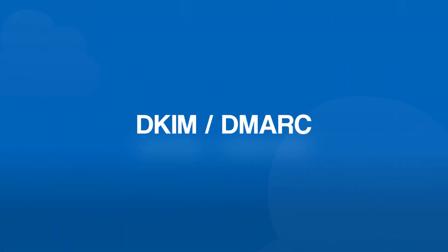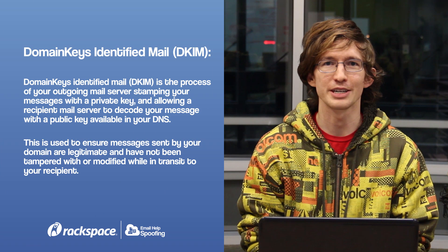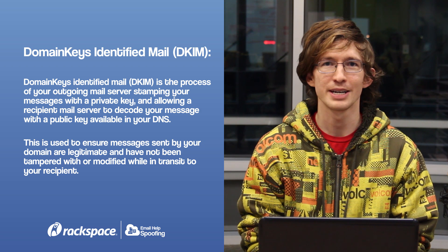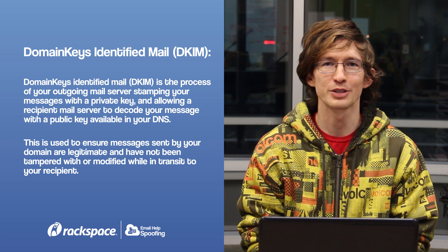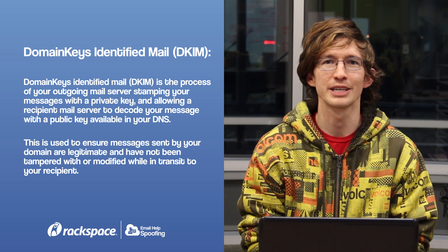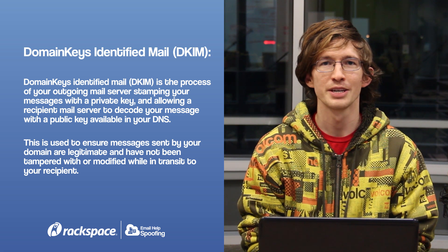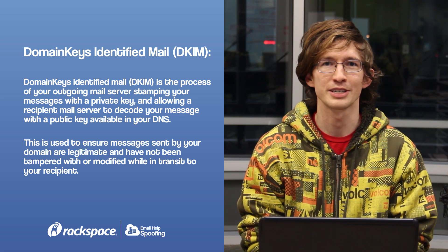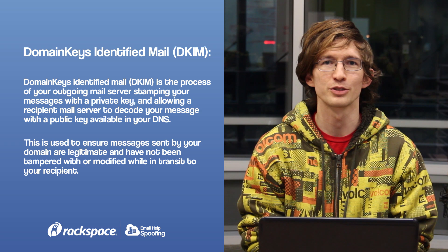Now, that brings us to DKIM and DMARC. DKIM is the process of your outgoing mail server signing your messages with a private key and allowing the recipient mail server to decode your messages with a public key available in your DNS. This is done to make sure your messages are not tampered with or modified while in transit.